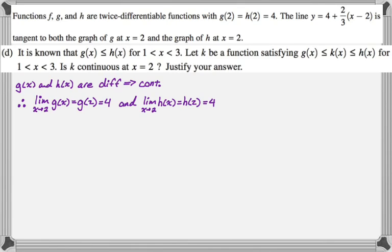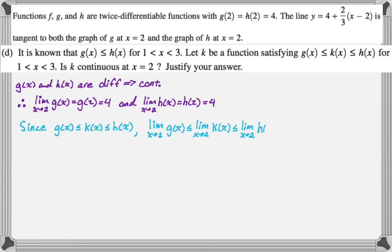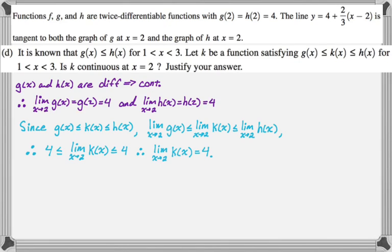We want to show the limit as x approaches two of k of x equals k of two. Since the inequality g of x is less than or equal to k of x is less than or equal to h of x holds, taking limits of each part gives: the limit as x approaches two of g of x is less than or equal to the limit as x approaches two of k of x is less than or equal to the limit as x approaches two of h of x. Both outer limits equal four, so by the squeeze theorem, the limit as x approaches two of k of x must equal four.